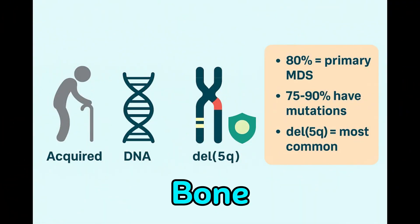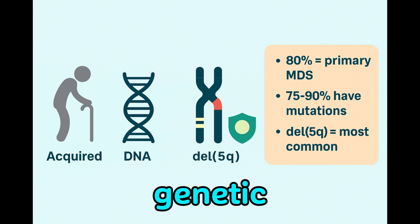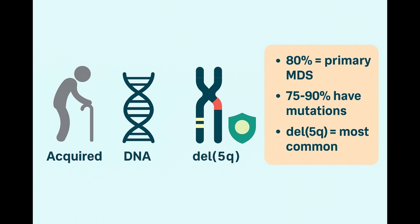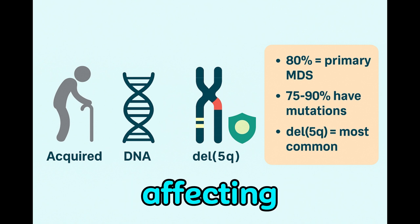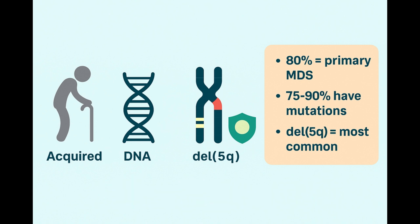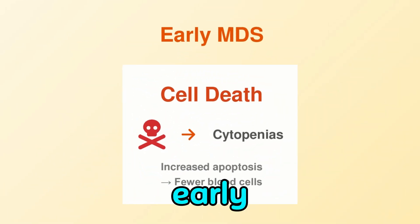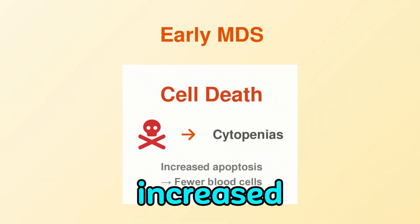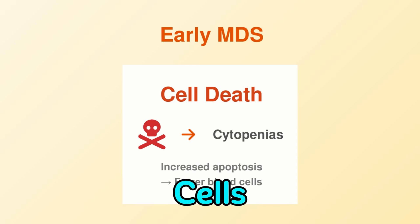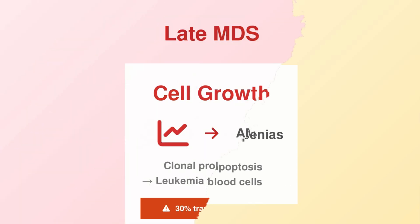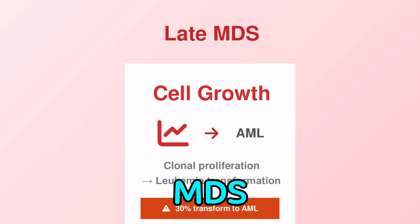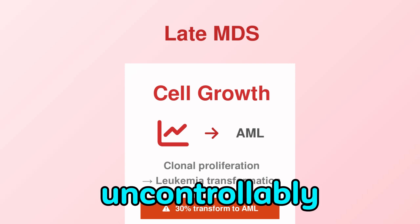In MDS, the bone marrow becomes abnormal due to genetic or chromosomal mutations, most commonly affecting chromosome 5. These mutated stem cells form a clonal population that suppresses healthy stem cells. Early in the disease, this leads to increased apoptosis, so cells die before entering the bloodstream. Later, if MDS progresses to leukemia, leukemic clones grow uncontrollably, crowding out normal cells.